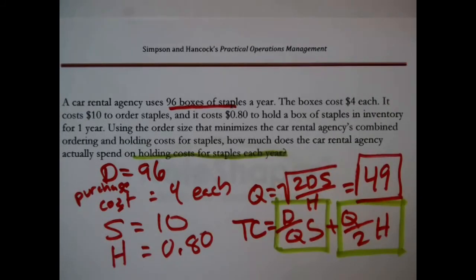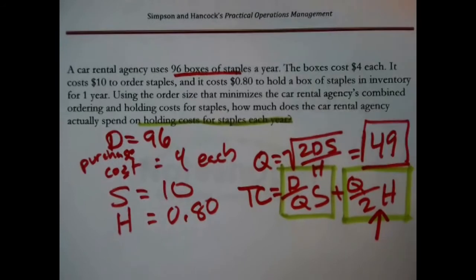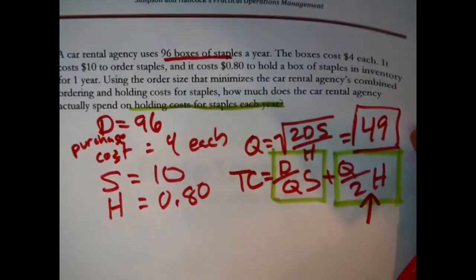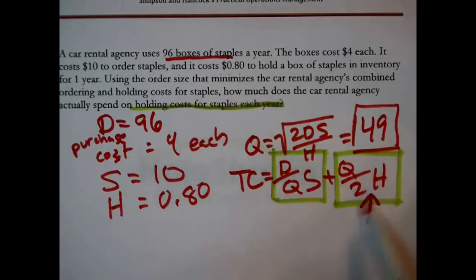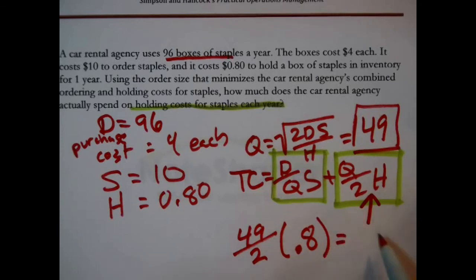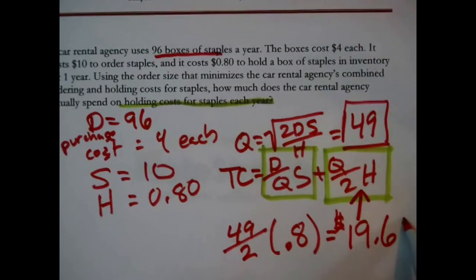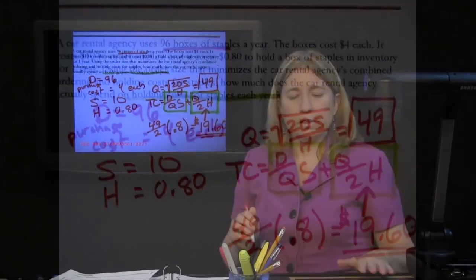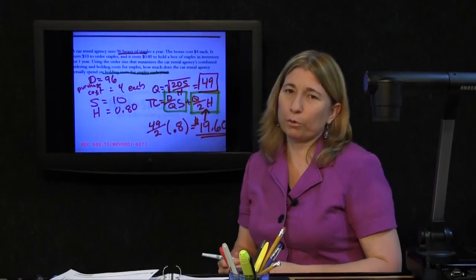So if you wanted to calculate, based on this policy, what they're actually paying to hold staples during the year, you'd say 49 divided by 2 times 0.8. That's what H is. What's that work out to be? $19.60. That is their total holding costs for the year.